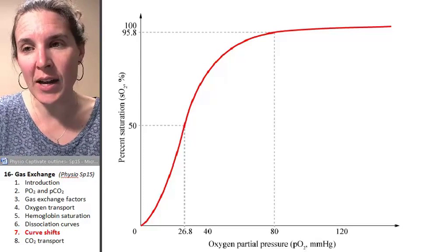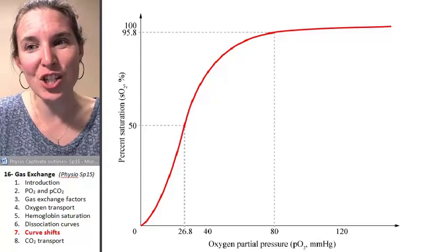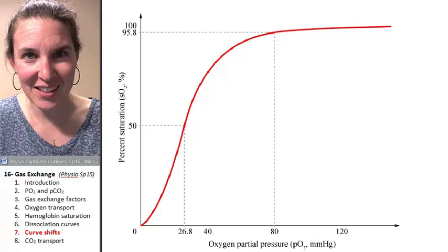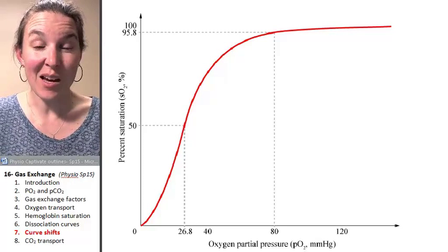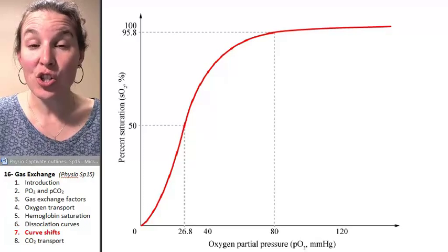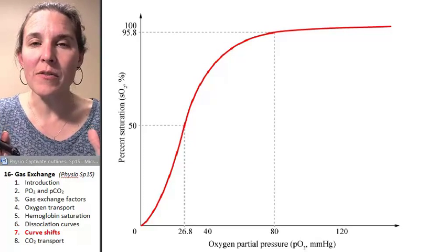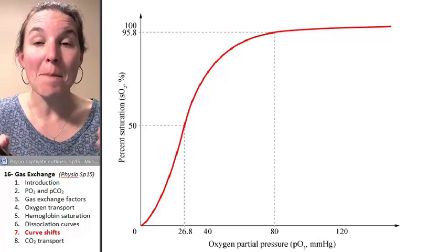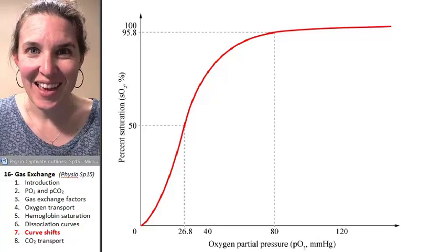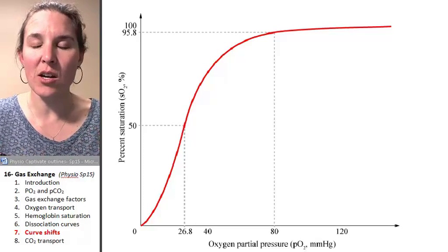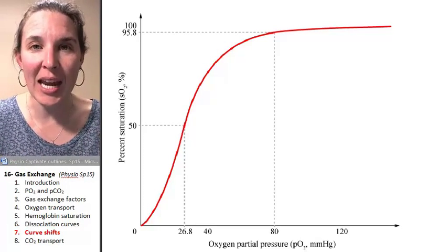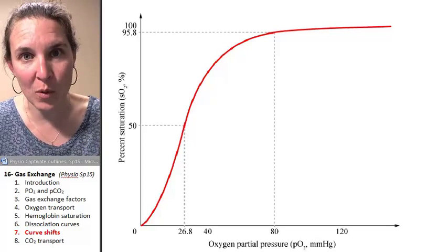Shifting the curve has to do with changing the shape of the hemoglobins in different chemical environments. So there are a couple of factors about the plasma that if those characteristics of the plasma change, the hemoglobin will change.